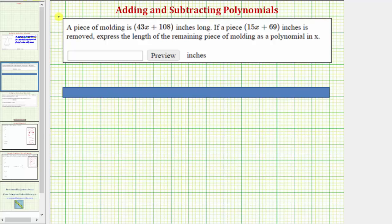So if this is the molding, we know the entire length, this length here, is equal to the quantity 43x plus 108 inches. And let's just say we remove this piece on the left, which we know has a length of the quantity 15x plus 69 inches.